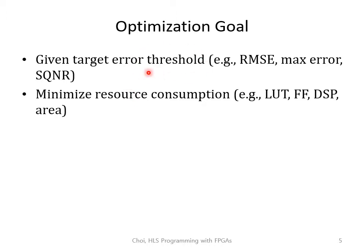For the error threshold, it will be given to you in some form of a specification. For example, it could be something like a SQNR of 30 decibels or more. For the resource consumption, it could be one of these FPGA resources, or if you're going with ASIC, it could be area in square millimeters. What you want to do is minimize as much as possible without going over the target threshold.